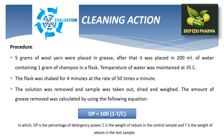The next parameter is cleaning action. In this procedure, 5 grams of olein is placed on a greased surface, then placed in 200 ml of water containing 1 gram of shampoo in a flask. Temperature is maintained at 35 degrees Celsius. The flask is shaken for 4 minutes at the rate of 50 times per minute. The solution is removed and the sample is taken out. The amount of grease removed is calculated using: DP = 100 × (1 − T/C), where DP is the percentage of detergency power, C is the weight of sebum in the control sample, and T is the weight of sebum in the test sample.